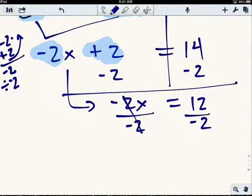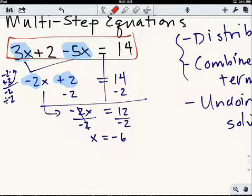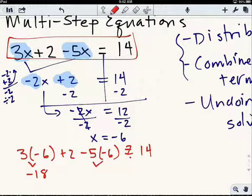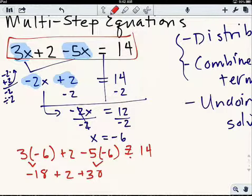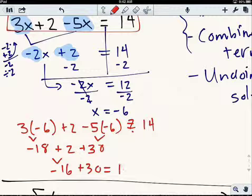Now I need to divide by negative 2 to undo the negative 2 times x. So I get negative 2 divided by negative 2 — that's just 1 — giving me x. 12 divided by negative 2 is negative 6. So I have this idea that x equals negative 6. But I want to check by plugging in to the original equation — that's the only way to make sure you don't make a mistake. So I do 3 times negative 6 plus 2 minus 5 times negative 6, plugging in with parentheses so I don't mess up any negative signs. 3 times negative 6 is negative 18. Negative 5 times negative 6 is positive 30, because negative times negative makes a positive. So I have negative 18 plus 2 plus 30. Negative 18 plus 2 is negative 16. Negative 16 plus 30 is positive 14. That indeed equals 14 — a true statement. So my answer must be correct.